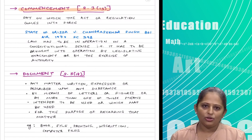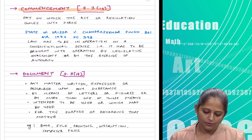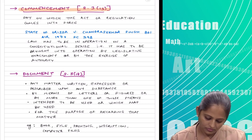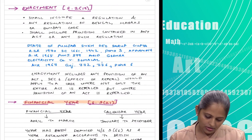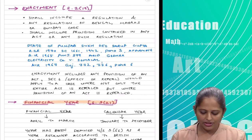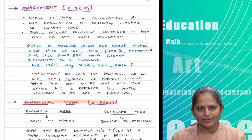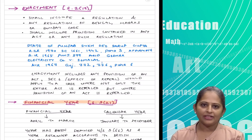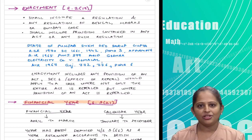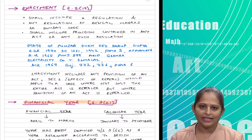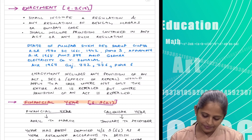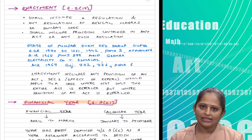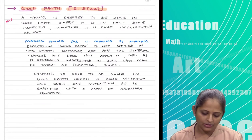Commencement is the date on which the act will actually come into force. Then you have the financial year and the calendar year. The year has been defined as per the British calendar — a calendar year is January to December, while a financial year is April to March. For terms like income tax, the financial year is always relevant. This has been asked as an MCQ and is pretty easy to answer.